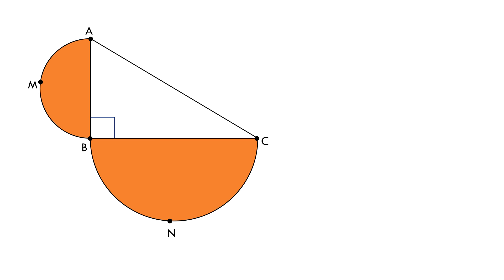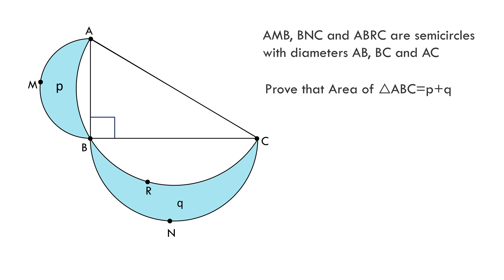And ABRC is a semicircle on diameter AC. If the area of this shaded region is P and the area of this shaded region is Q, prove that the area of triangle ABC is equal to P plus Q.